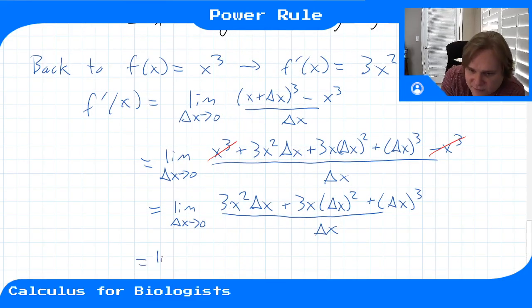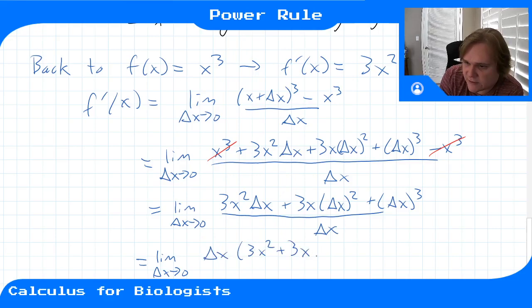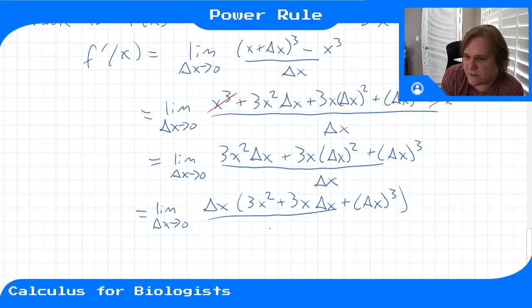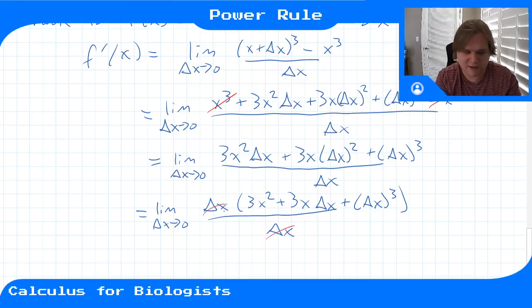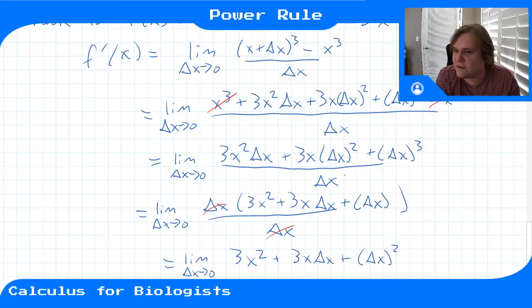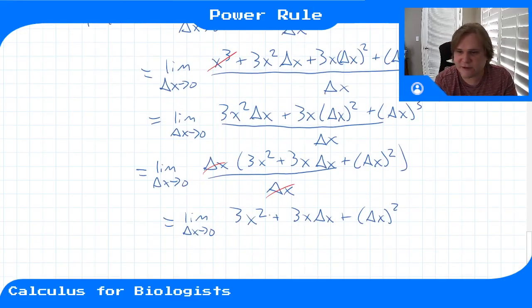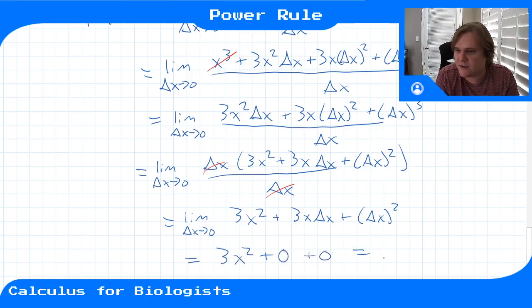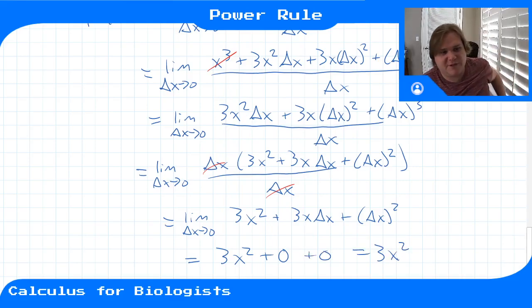We can factor out a delta x on top. This gives us delta x times quantity three x squared plus three x delta x plus delta x squared, all over delta x. Our delta x's cancel, and we're left with the limit as delta x goes to zero of three x squared plus three x delta x plus delta x squared. When we plug in delta x equals zero, all remaining delta x terms vanish, giving us three x squared — exactly what we get when we apply the power rule.